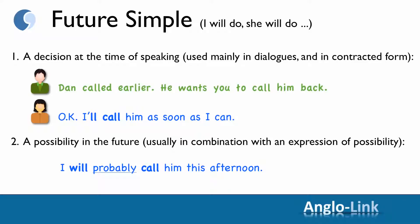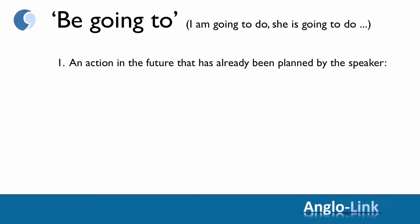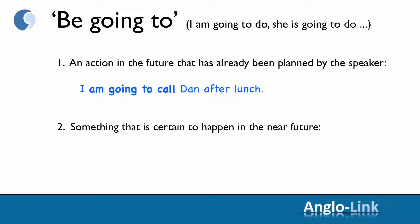From future simple, we moved on to the going to form — I'm going to do, she's going to do, etc. And as you will remember, there are also two usages. The first one is an action in the future that has already been planned by the speaker — for example: I'm going to call Dan after lunch. The speaker has already decided what he or she is going to do. This form is also used for something that is certain to happen in the near future — for example: I know he's going to invite me out. The speaker is sure that this action is going to happen.